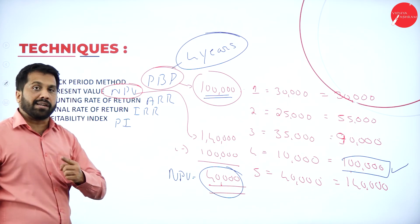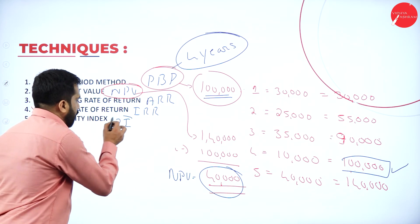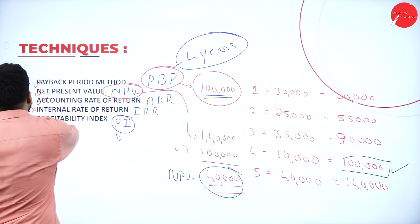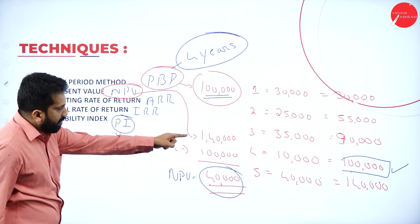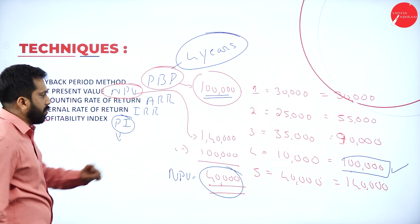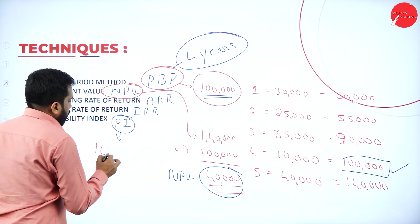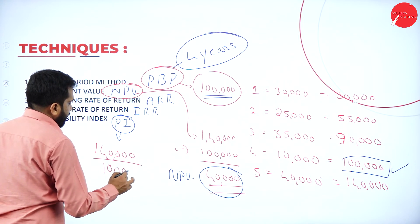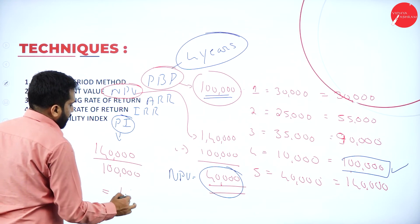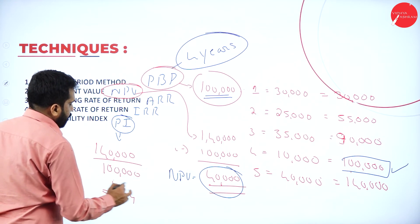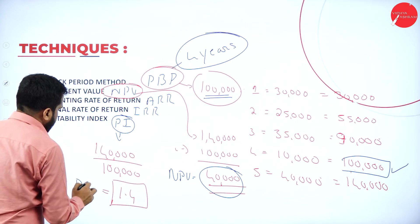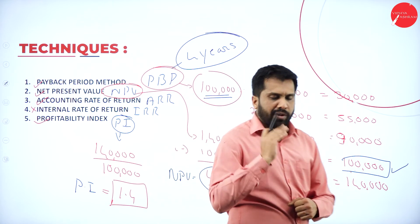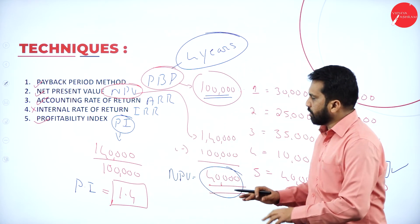IRR I'll explain later while doing problems. Now for Profitability Index — PI — the easiest one. Take the same values: 1,40,000 divided by 1,00,000. Your answer is 1.4. This is called the Profitability Index. We'll go with the original problem — the only additions will be the tax portion, depreciation portion, and discount factors. Other than those three, we have covered almost everything.